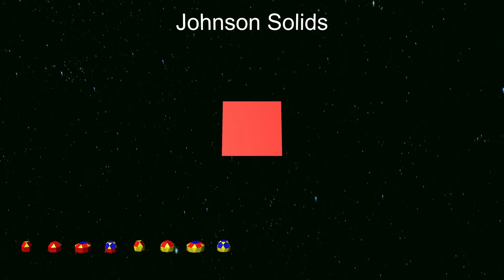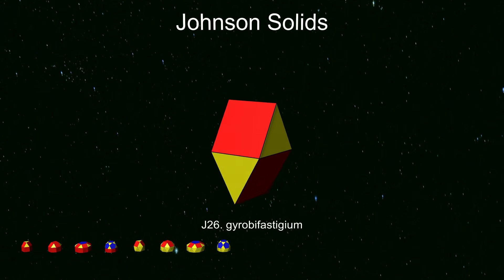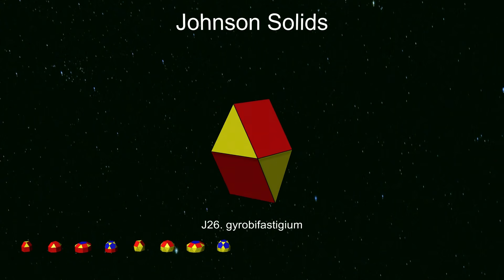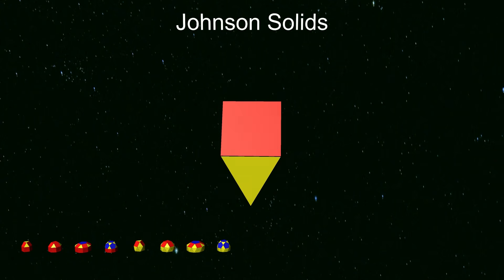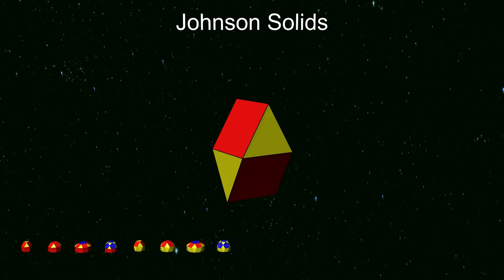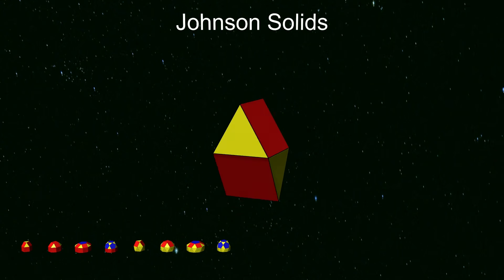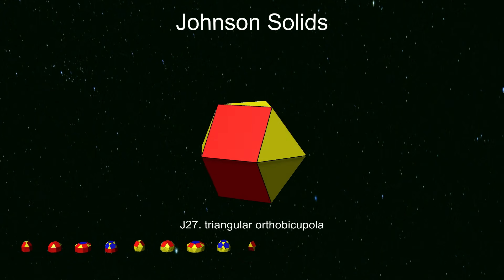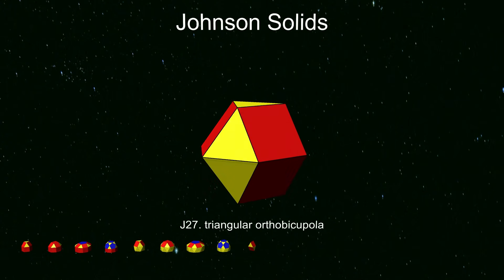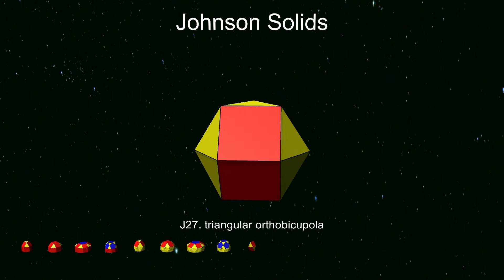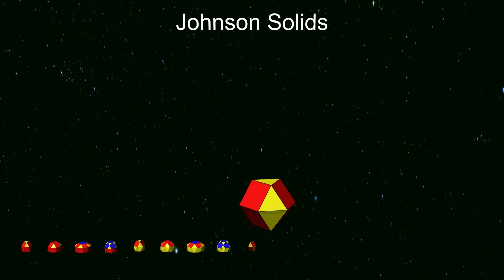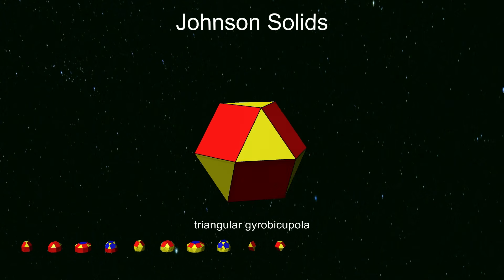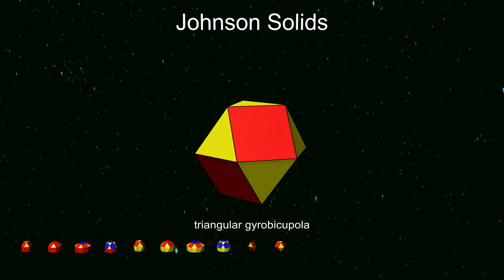For back-to-back cupolas and rotunda, we start with the exotically named gyrobifastigium, which is made from two triangular prisms. The triangular prism can be thought of as a type of cupola, with a square base surrounded by alternating squares and triangles, and an imaginary edge at the top. Other back-to-back cupolas come in two types: if triangles are joined to triangles, the prefix ortho is used, such as the triangular orthobicupola. If triangles are joined to squares, gyro is used, such as the triangular gyrobicupola — but this is in fact an Archimedean cuboctahedron, so we discard it.